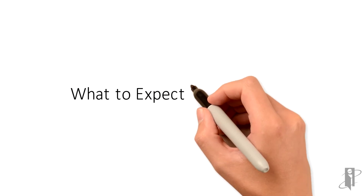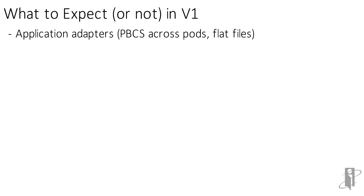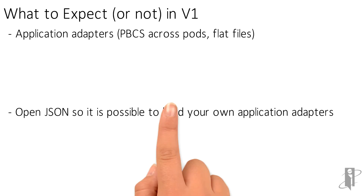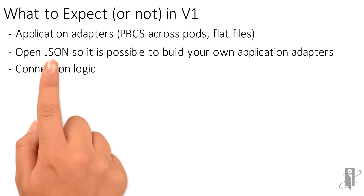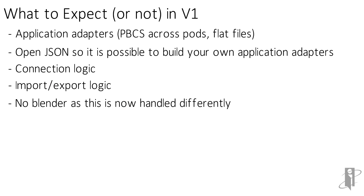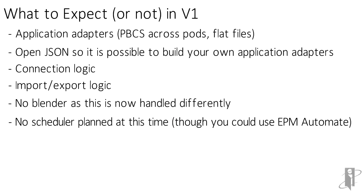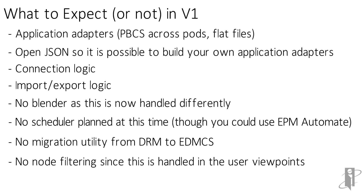Here's what to expect in version 1. There will be some basic application adapters, namely for PBCS across pods and a flat file adapter. The adapters are written in JSON, so it would be feasible to write your own custom adapters — they have connection logic and import-export logic built in. There will be no more blender since the technology handles blending differently than in DRM. In version 1, there will be no scheduling, nor is it planned by Oracle at this time. There are no migration utilities from DRM to EDM-CS. Node filtering is now handled by the viewpoint. Under the hood, EDM-CS will use FDMEE for select integration.